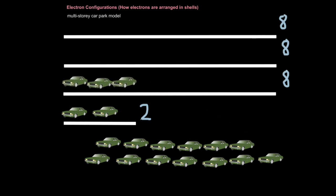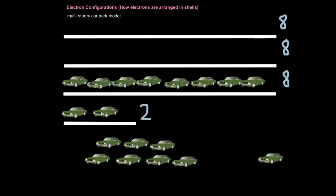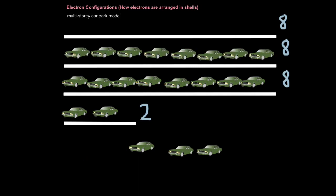So, the first floor takes two cars, and when this floor is filled, then cars will move to the next floor, which can take eight. So, you keep moving these cars in until that level is filled. When the next level is filled, then you have to move on to the one above, until that floor is filled. The next floor can also take eight, but at the moment, we've only got three cars left. So, you'll just put the three cars on the final floor here.